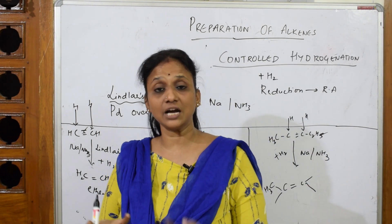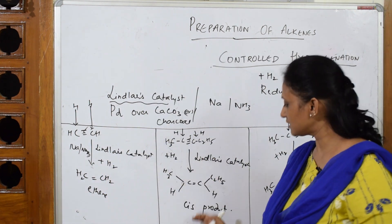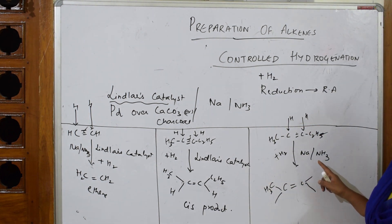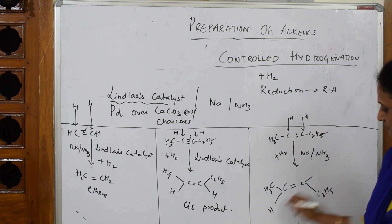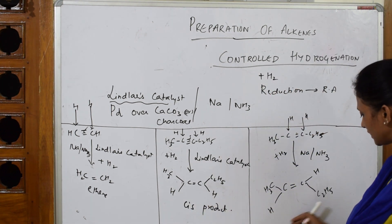Here what happens is the CH3 is here only. But in the presence of Na/NH3, when you're controlling the hydrogenation reaction, the major product is - Lindlar's catalyst, the major product is cis isomer. But here when you take Na in sodium NH3, the major product will become trans. See here, hydrogen and hydrogen are in the opposite direction. So cis means same direction, trans means opposite direction. So you will be getting a trans isomer or trans product.